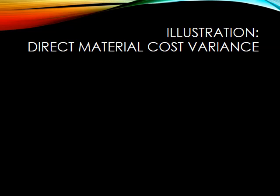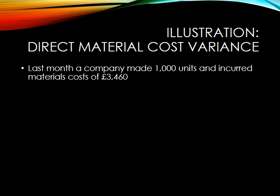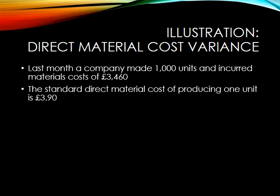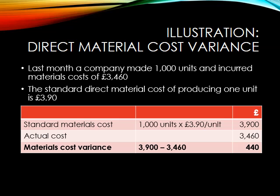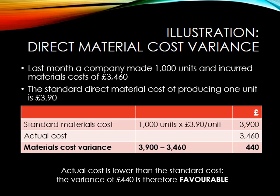Let's look at an illustration of how we calculate this material cost variance. Last month the company made 1,000 units and we had direct material costs of £3,460. The standard direct material cost of producing one unit is £3.90. So we calculate the standard materials cost: 1,000 units at £3.90 each gives us £3,900. Comparing that against the actual cost of £3,460, we get a direct materials cost variance of £440. As our actual cost is lower than the standard cost, we have a favourable variance.